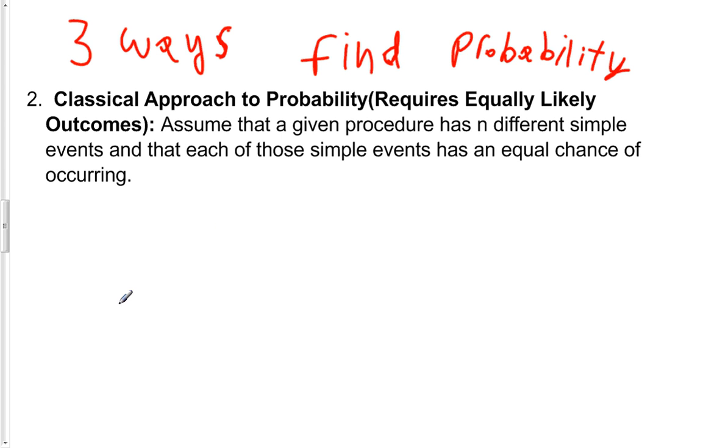And what we're going to do is, in order to find the probability of A, we're going to look at the ratio of the number of ways that A can occur.